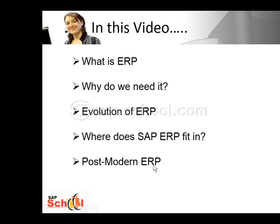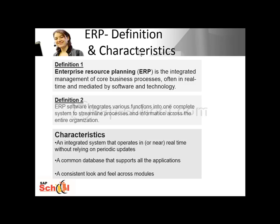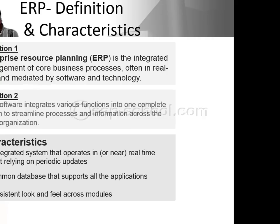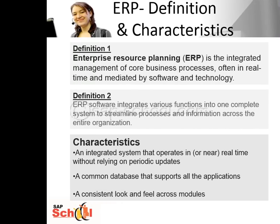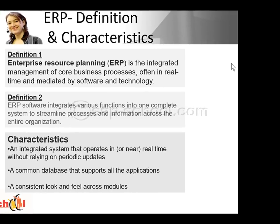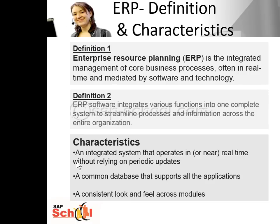What is post-modern ERP? There are many definitions of ERP floating around and two of the most common ones are listed here. ERP is an acronym for Enterprise Resource Planning. The central feature of an ERP system is a shared database that supports multiple functions used by different business units. Some of the key characteristics of ERP are an integrated centralized system, a common database, and a consistent look and feel across different modules.